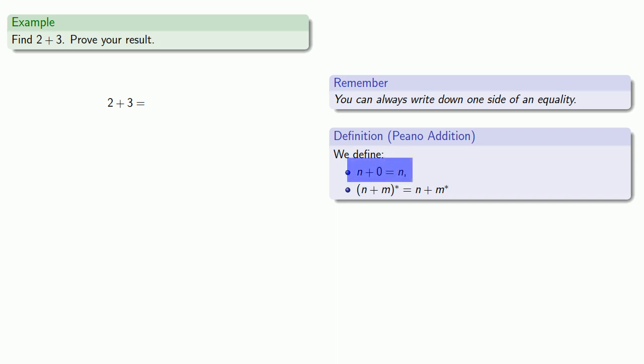What if we do something more complicated? How about let's find 2 plus 3 and, again, prove our result. So, again, we can always write down one side of an equality. So, we can write down 2 plus 3 equals. And, again, our definition of addition doesn't tell us what happens when we add anything other than 0. But we do know that 3 is the successor of 2.